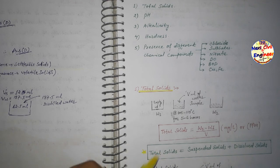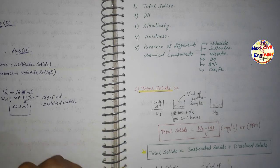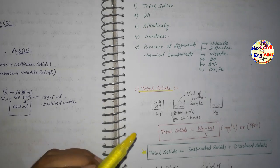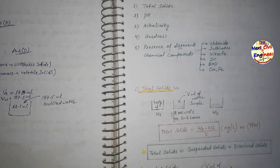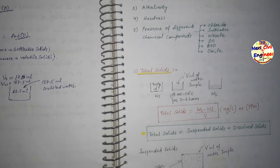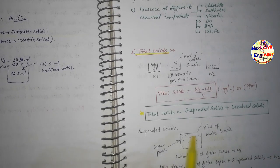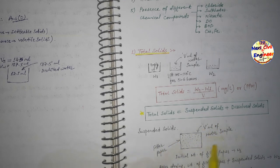You can pause the video and note down important concepts regarding chemical parameters of water. Looking at the figure for suspended solids: a filter paper is used, and the water sample is passed through it. The residue retained on the filter paper after drying gives us the suspended solids.